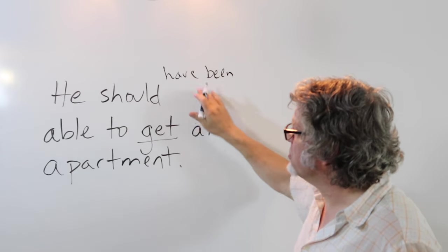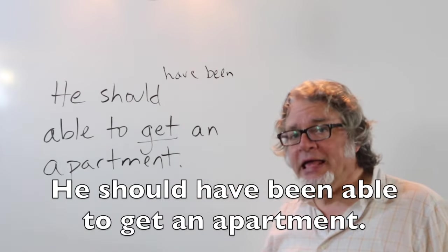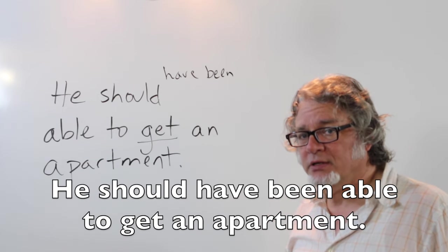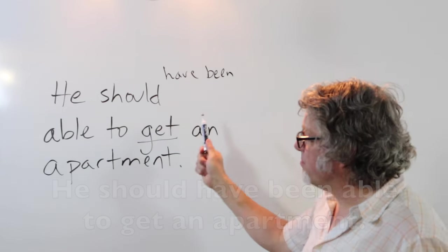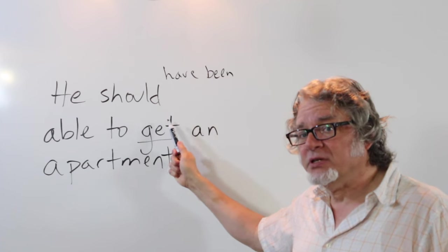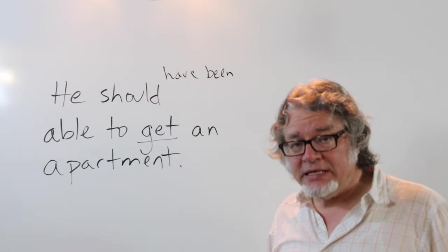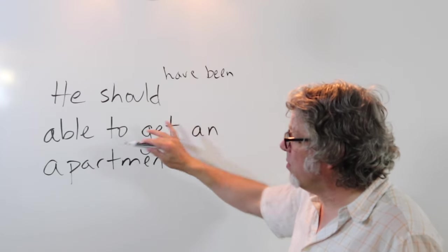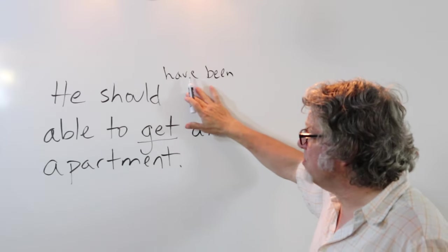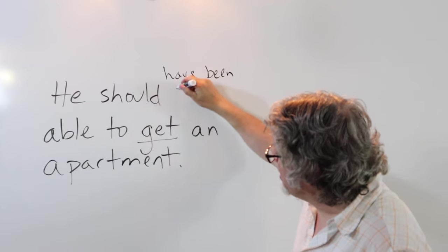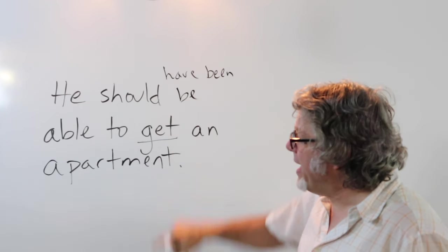He should have been able to get an apartment. This means perhaps that the person did not get an apartment. This is an easy way to put the whole verb phrase into the past tense. Just replace 'be' with 'have been.' Should have been.